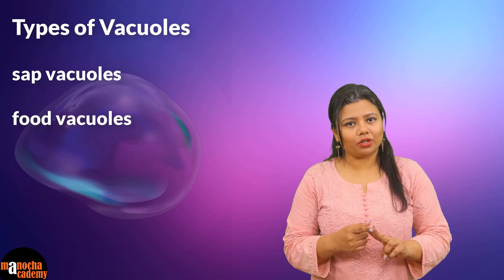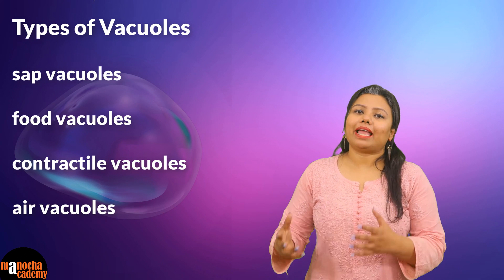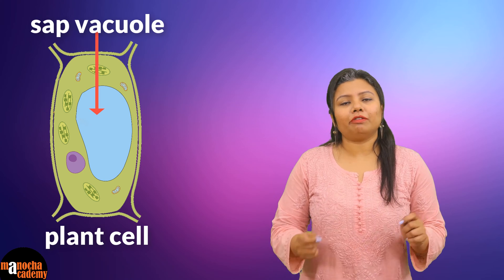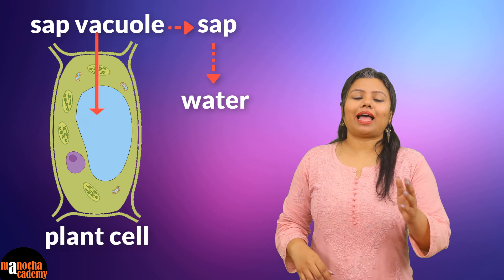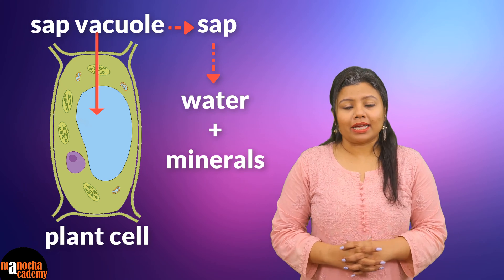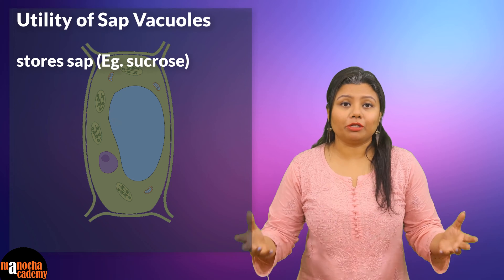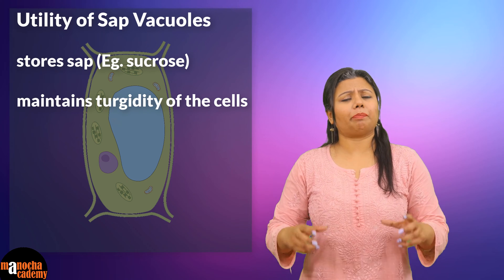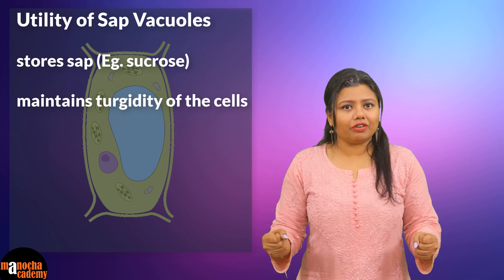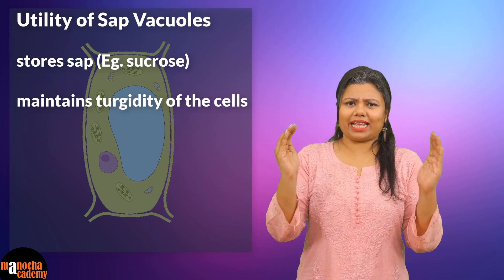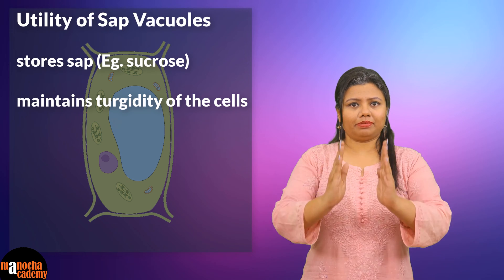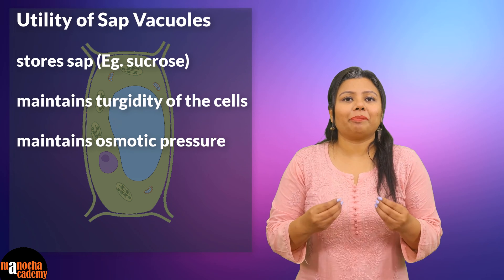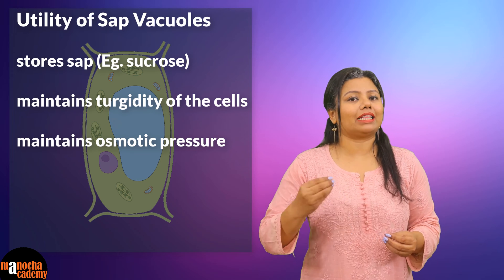Sap vacuoles are abundant in plant cells and are responsible for storing sap — that is, water and minerals. They also store food, for example sucrose. By storing water and minerals, they maintain the turgidity of the cell, giving the plant cell strength and rigidity. This keeps the cell stretched and expanded so the plant can stand straight. Sap vacuoles are also responsible for maintaining osmotic pressure, that is, the concentration of the cell cytoplasm.